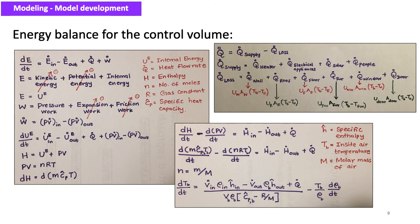The heat losses can be represented as U·A·ΔT, where U is the overall heat transfer coefficient, A is the surface area of heat transfer, and ΔT is the temperature difference. These are the terms used in this equation.